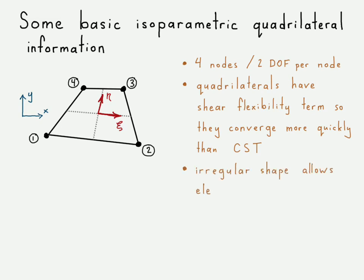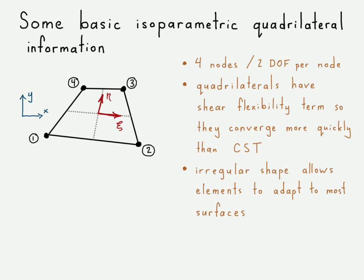The irregular shape allows the element to adapt to most surfaces. We could make plain rectangular elements that don't have this natural coordinate system, but they wouldn't be able to map very well to irregular surfaces. Because this element can adapt to most surfaces like a constant strain triangle element can, and because it has this additional shear flexibility term, it is able to converge more quickly. That's one major advantage.